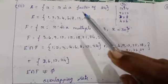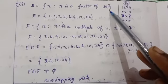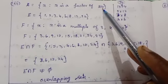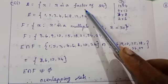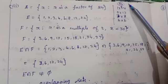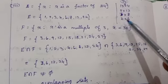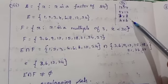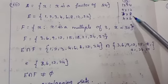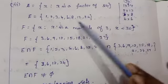Next, E is equal to set of all X such that X is a factor of 24. Factor of 24: product of two values equal to 24 — 1×24, 2×12, 3×8, 4×6. So the factors are 1, 2, 3, 4, 6, 8, 12, 24. Write in ascending order.